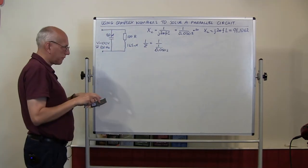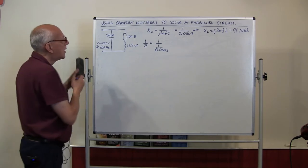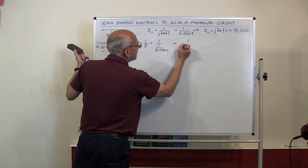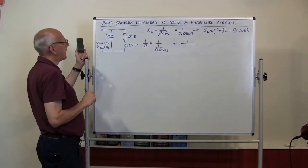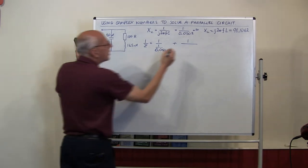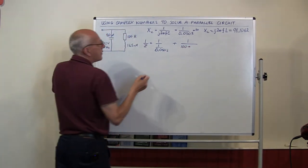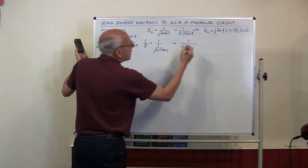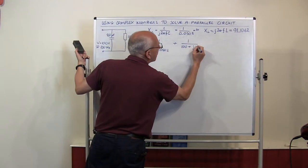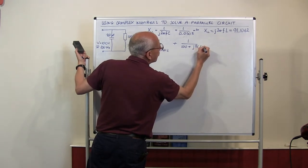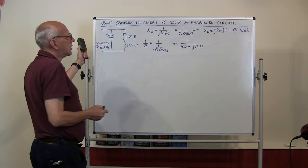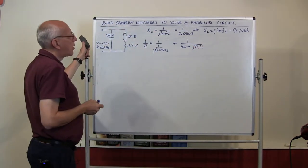So the combined 1/Z is going to be that capacitor part added together with the inductor branch. Since the resistor and inductor are in series, you simply add them: it's 100 (the resistor) plus j 91.11 (the inductor reactance). That's what we do our maths with.